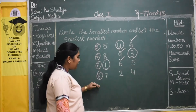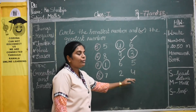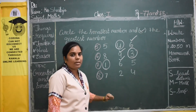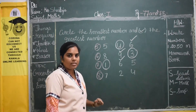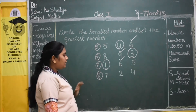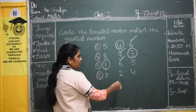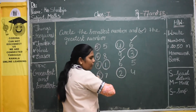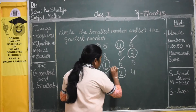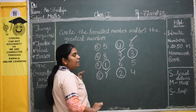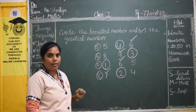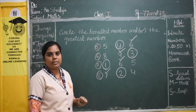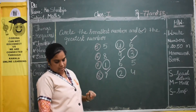Coming to the 8th one — 7, 2, 4. So in this, which is the greatest number and which is the smallest number? 2 is the smallest number. We should circle the 2. And we should put a tick mark to 7 — that is the greatest number. Okay, children? Are you supposed to copy this down in your textbook? Yes.